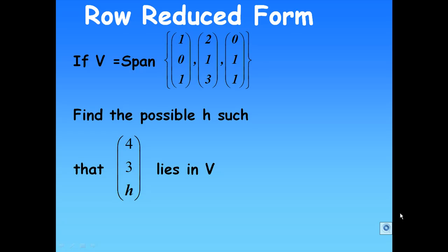Hi, for this recording we are given V equal to span of [1,0,1], [2,1,3], and [0,1,1]. We are going to find the possible H such that [4,3,H] lies in V.